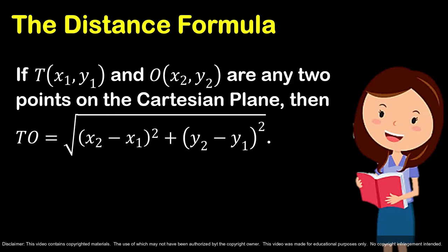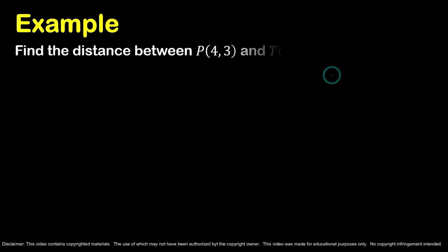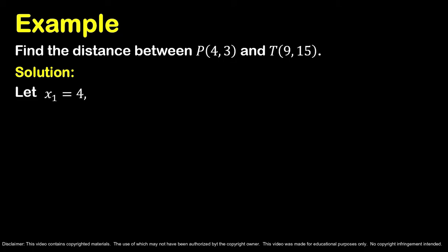Let us have examples on how to determine the distance between two points. Find the distance between point P(4, 3) and point T(9, 15). To solve for the distance, let us determine first the given values: let x₁ equal 4, y₁ equal 3, x₂ equal 9, and y₂ equal 15.